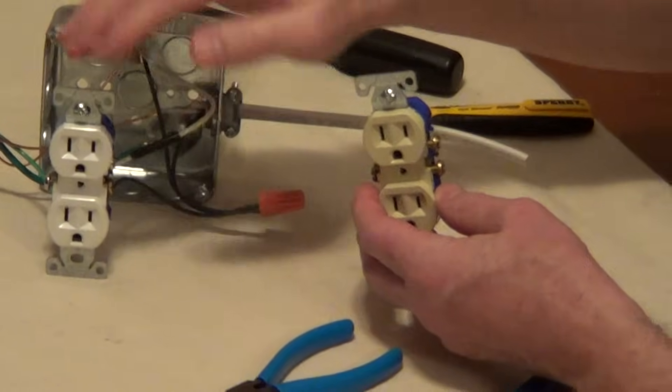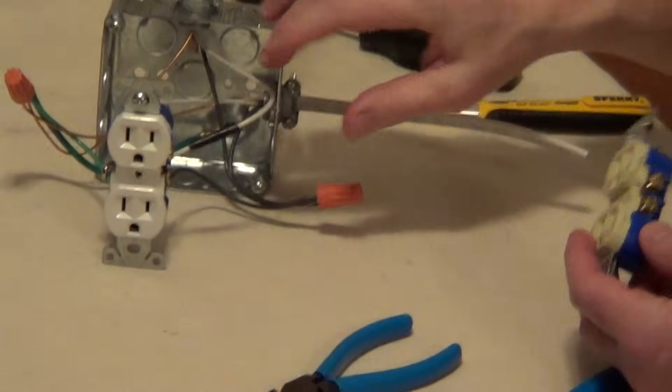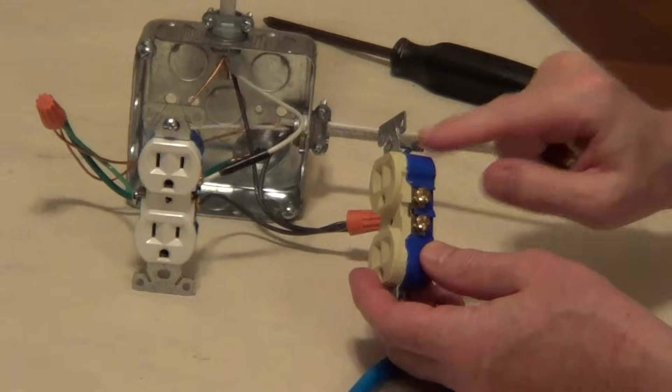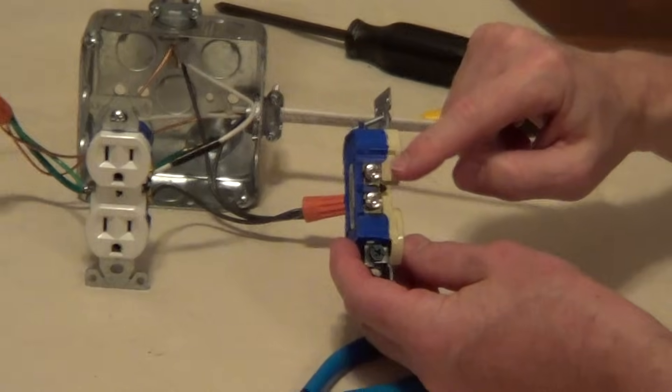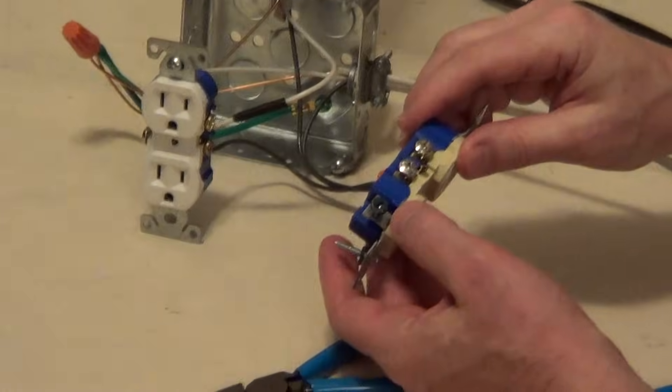Unscrew the old outlet, and then on the new outlet, our hot wires will be connected to the brass screw. Our neutral wire is going to be going to the silver screw and our ground wire to the green screw.